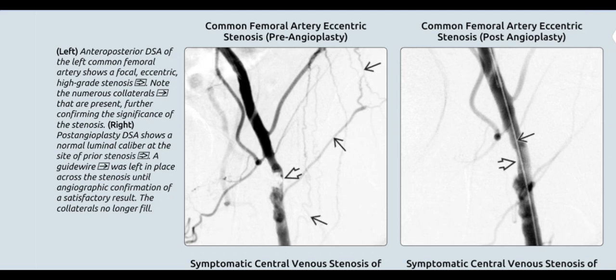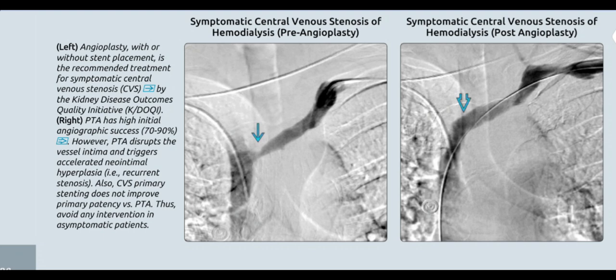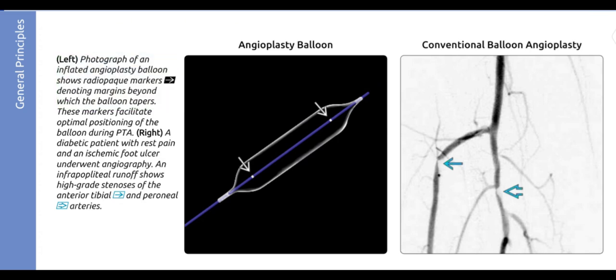A right internal iliac angiogram shows multifocal areas of extravasation, which were treated with Gelfoam embolization. The patient was ASA class 5E. Anteroposterior DSA of the left common femoral artery shows a focal eccentric high-grade stenosis with numerous collaterals confirming the significance of the stenosis. Post-angioplasty DSA shows normal luminal caliber at the site of prior stenosis; a guidewire was left in place across the stenosis until angiographic confirmation of a satisfactory result, and the collaterals no longer fill. Angioplasty with or without stent placement is the recommended treatment for symptomatic central venous stenosis per KDOQI; however, PTA disrupts the vessel intima and triggers accelerated neointimal hyperplasia, and primary stenting does not improve primary patency versus PTA — thus avoid intervention in asymptomatic patients.